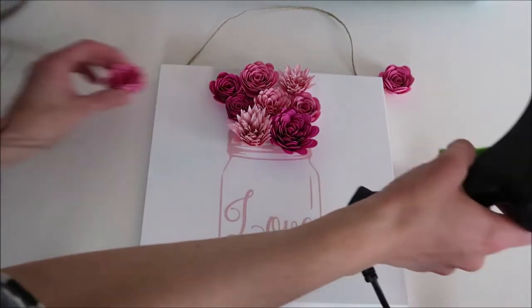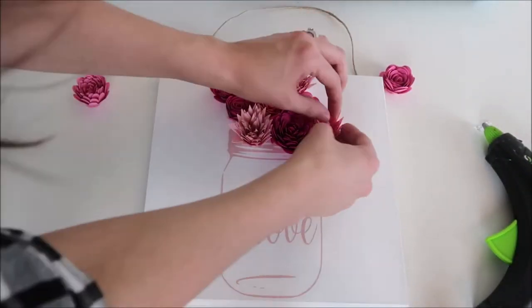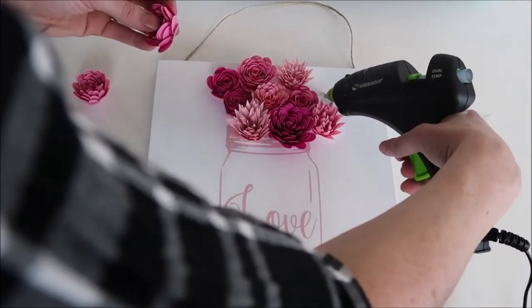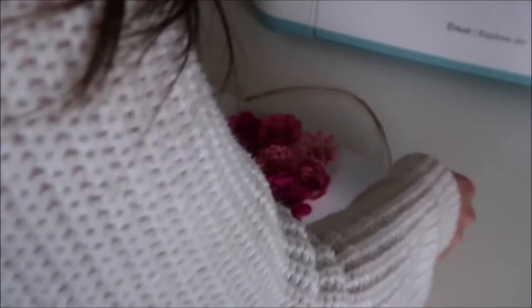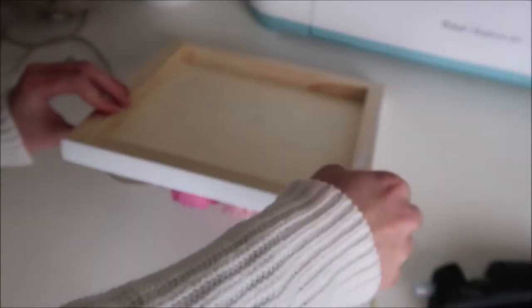After I had it all together, I decided to add three more flowers just to give it a fuller look. Then I took some twine and grabbed my glue gun and glued it to the back of the board.